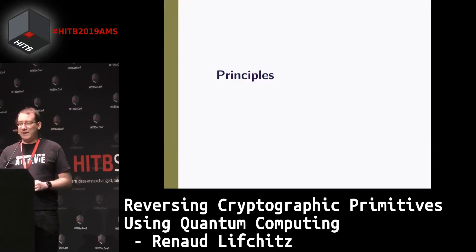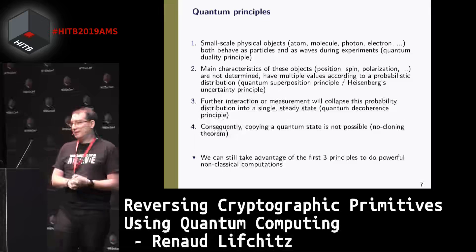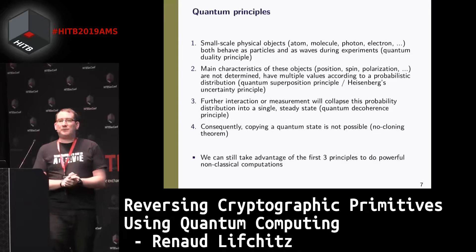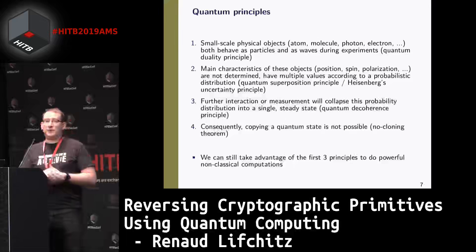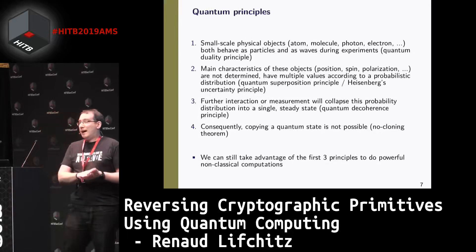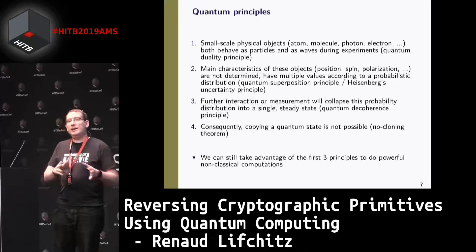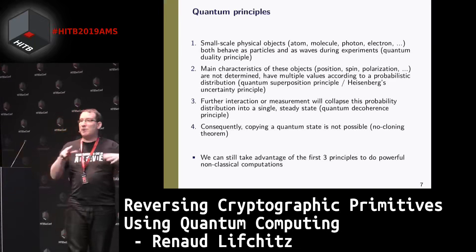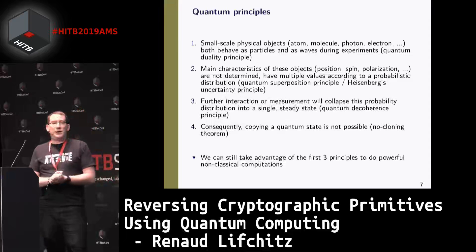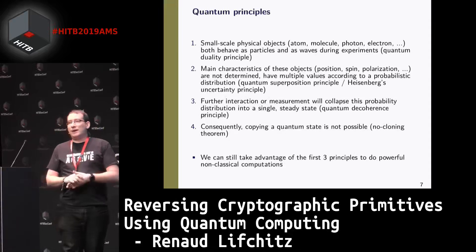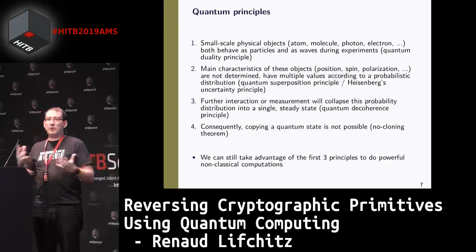Let's start with the basics of quantum computing. Small-scale objects like atoms, molecules, photons, and electrons behave as both particles and waves during experiments — it depends on how you measure them. If you measure for position, they behave as a particle. If you measure frequency or power, they behave as a wave.